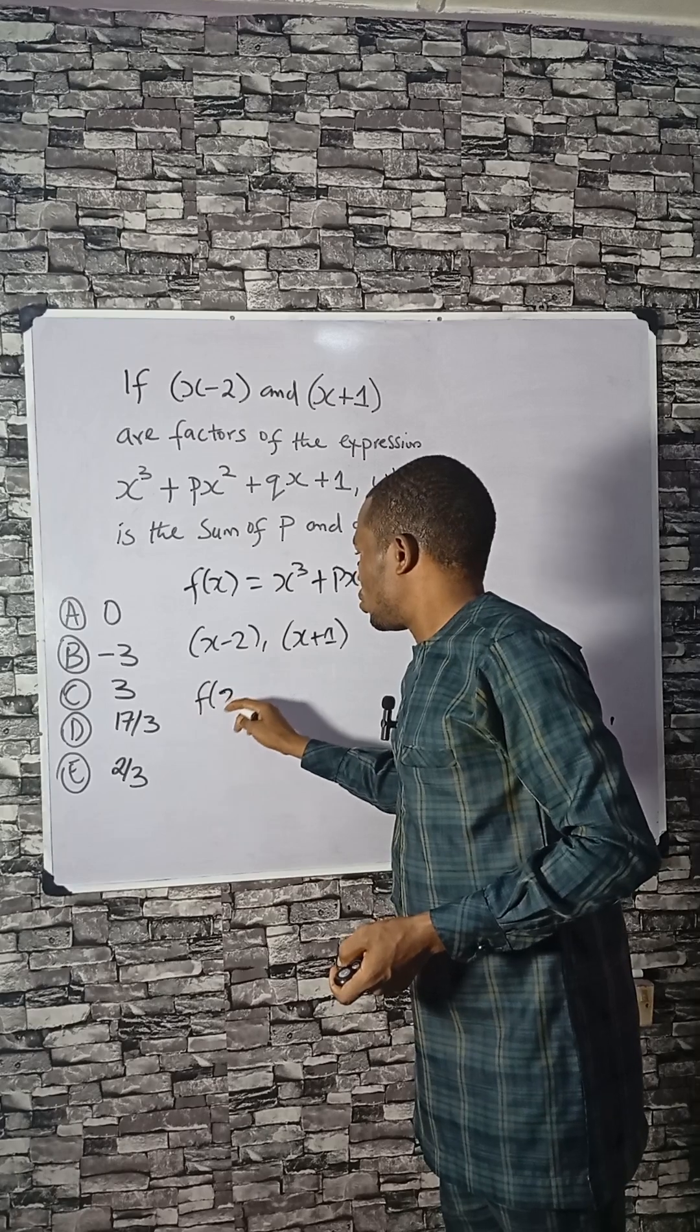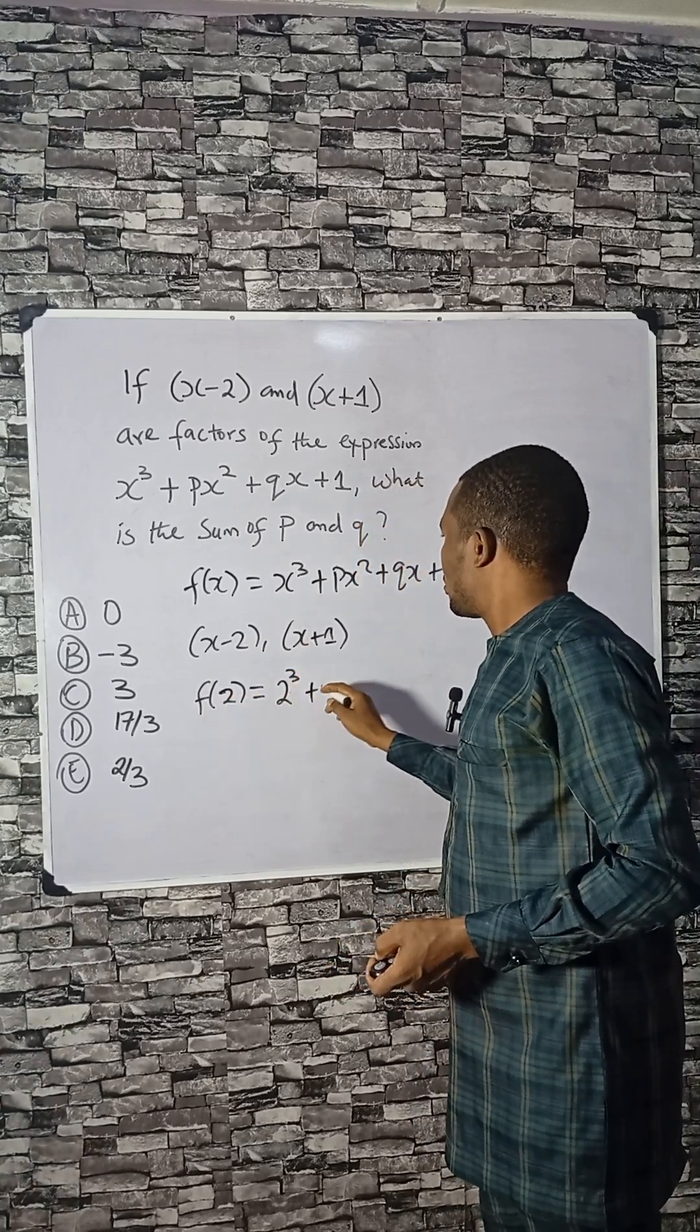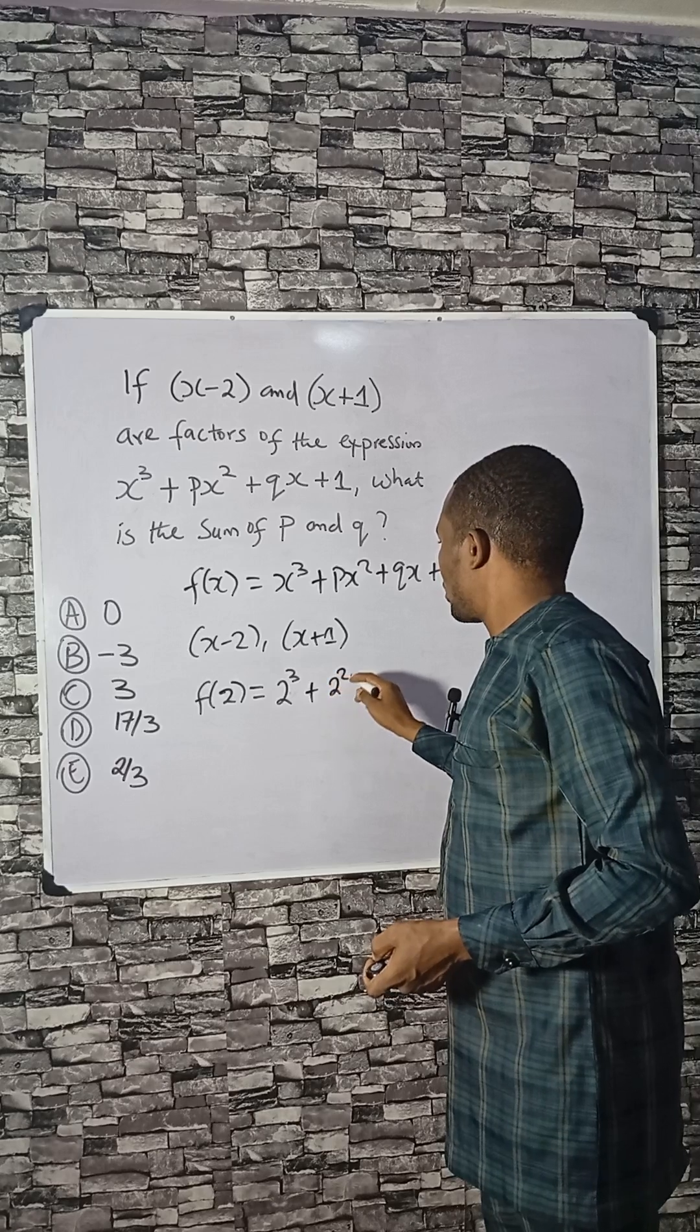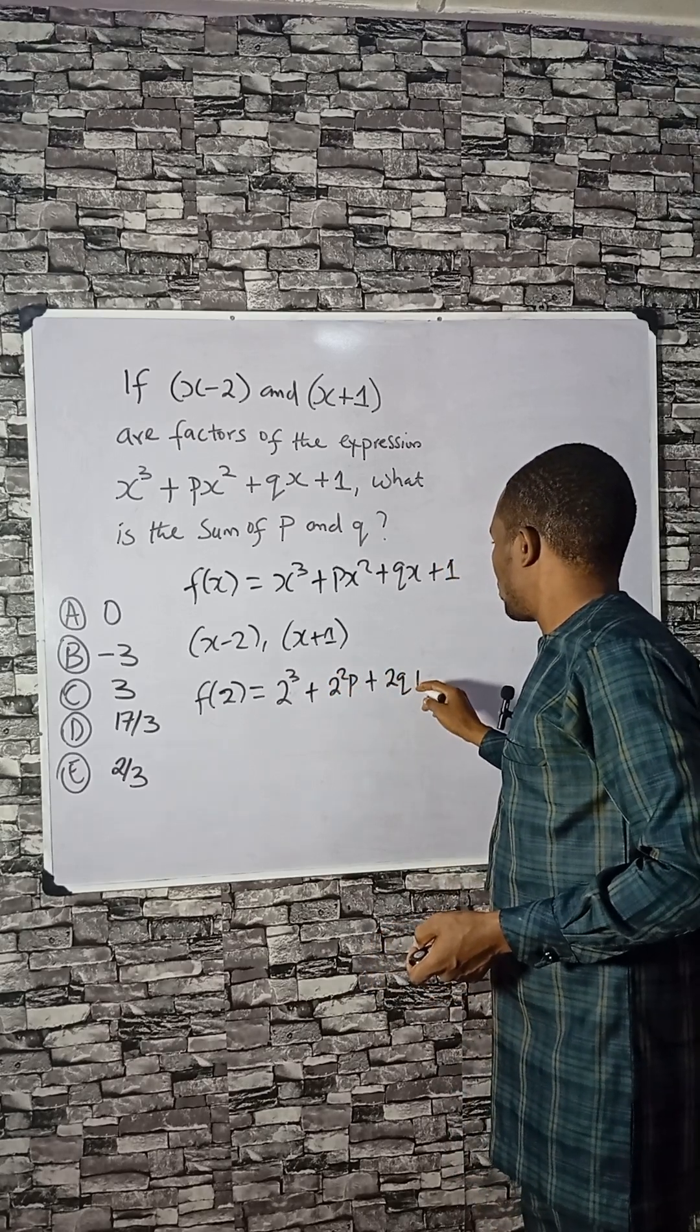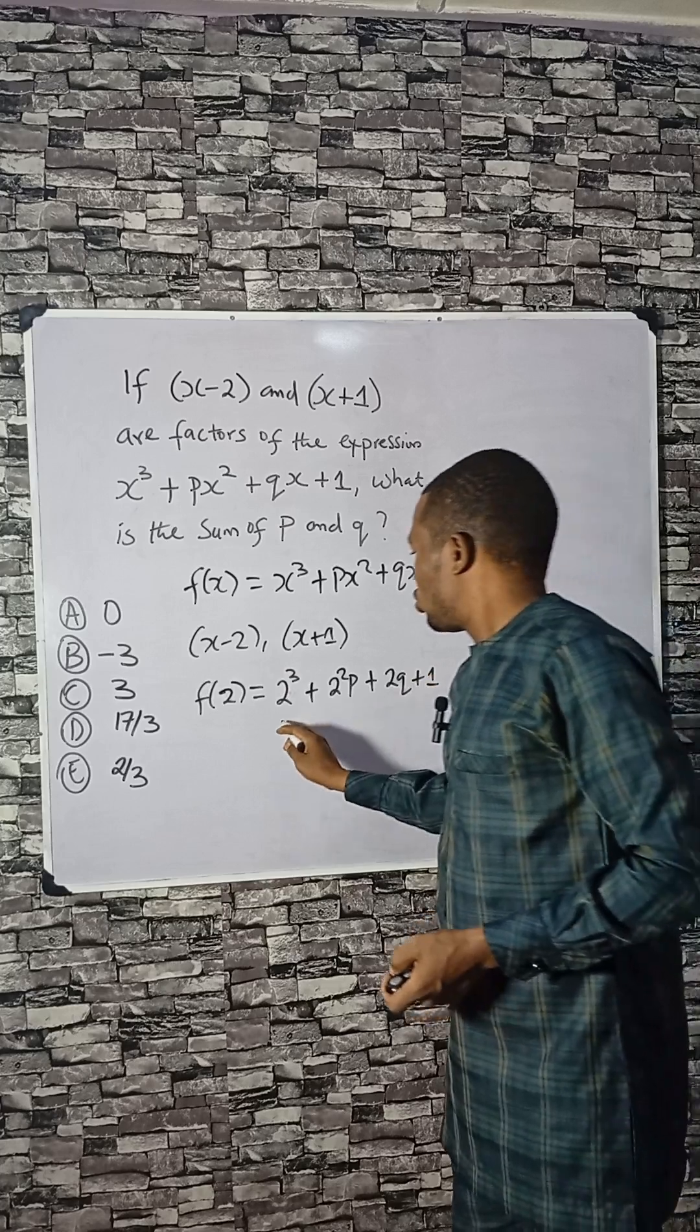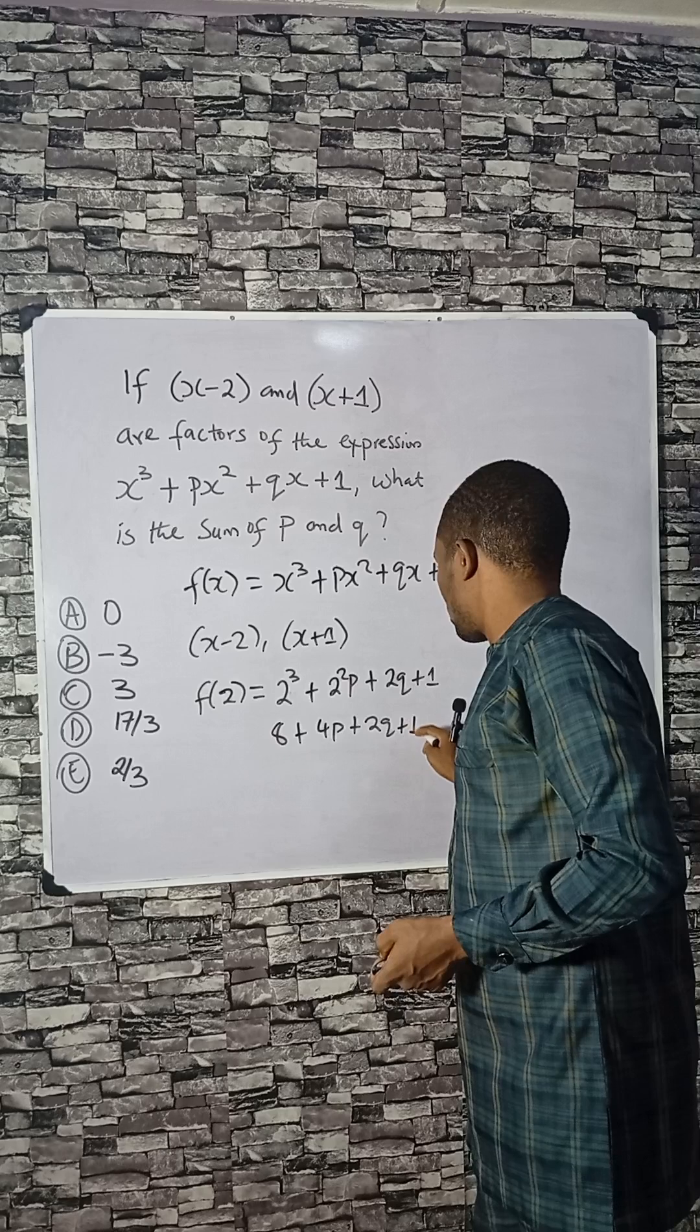So f of positive 2 will be 2 cubed plus 2 squared p plus 2q plus 1. This will be 8 plus 4p plus 2q plus 1.